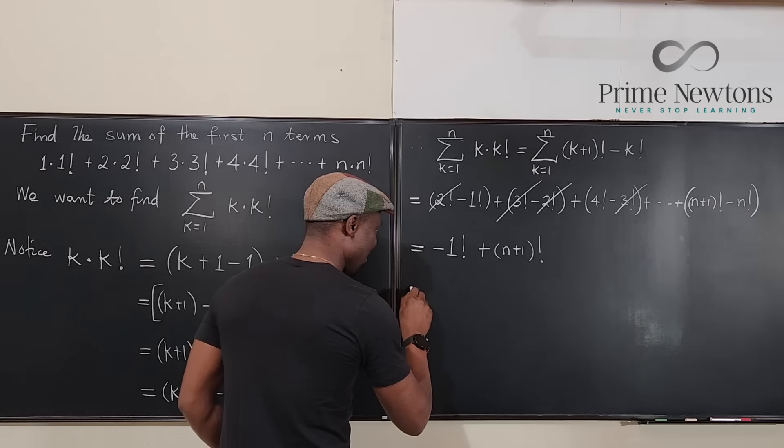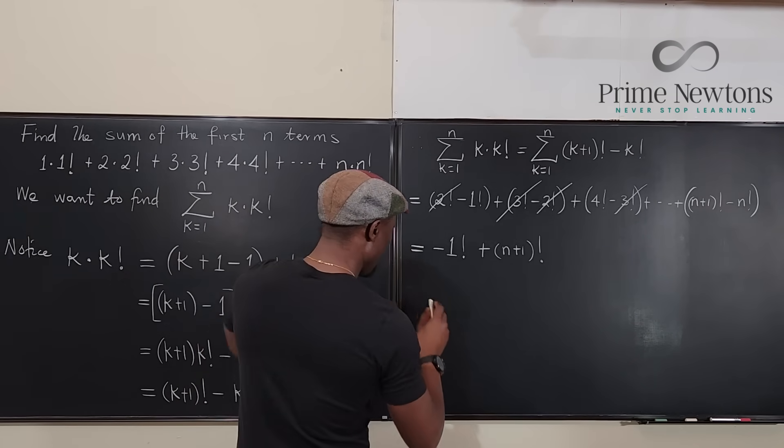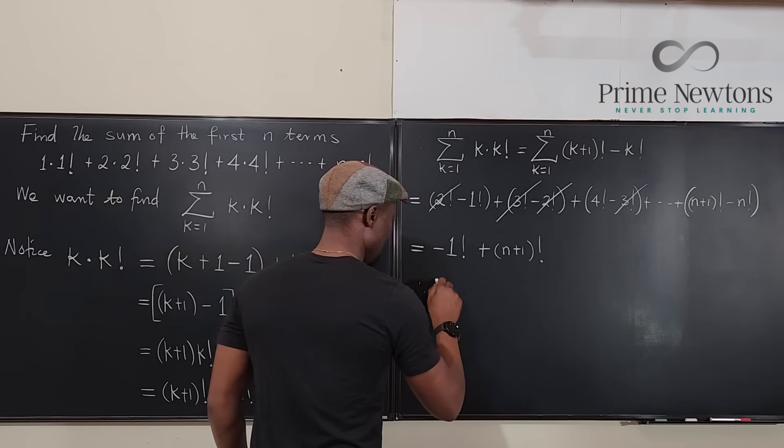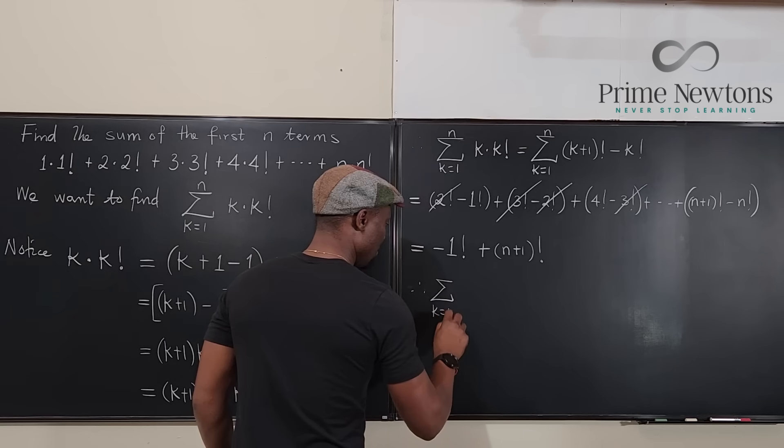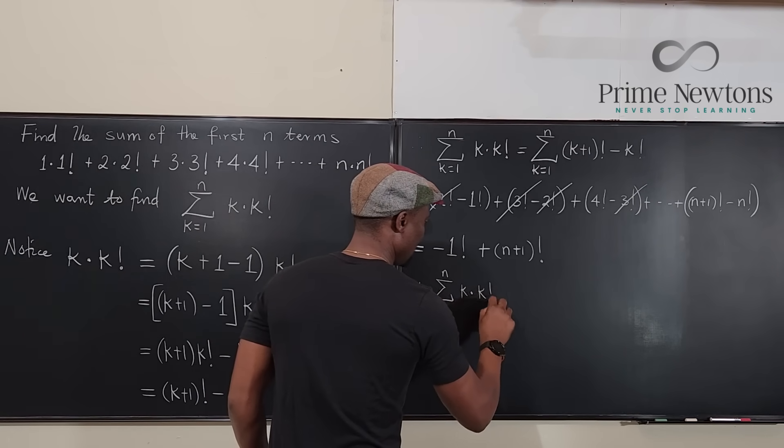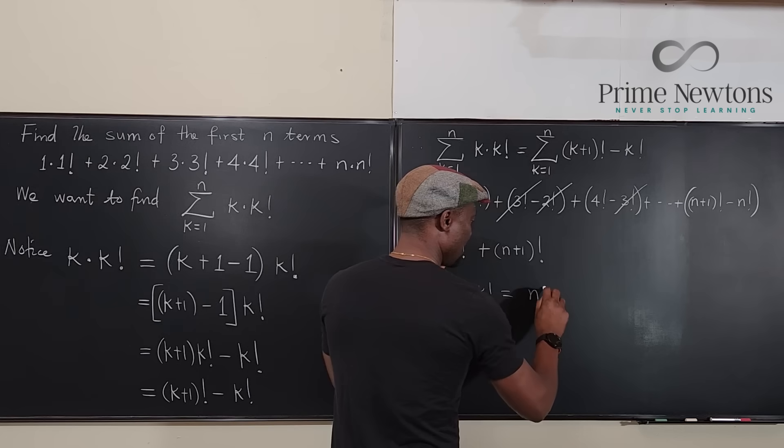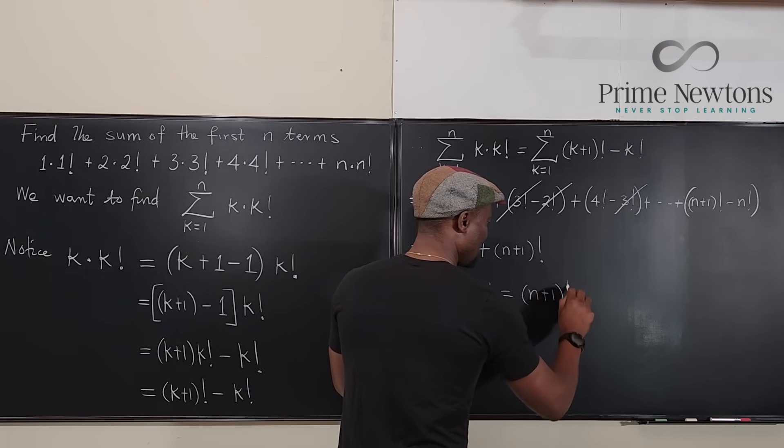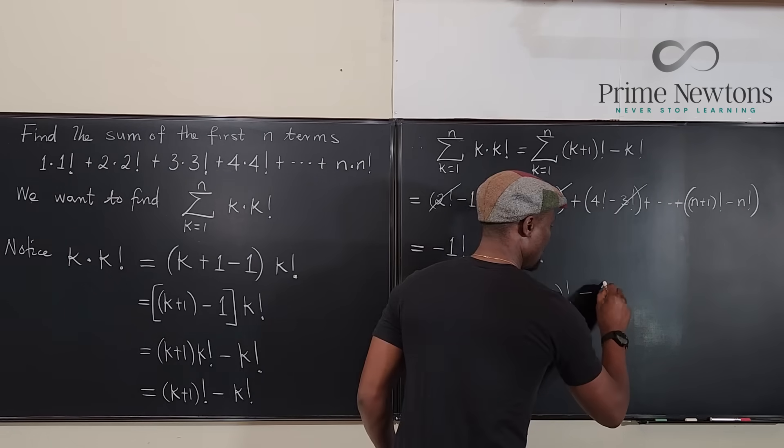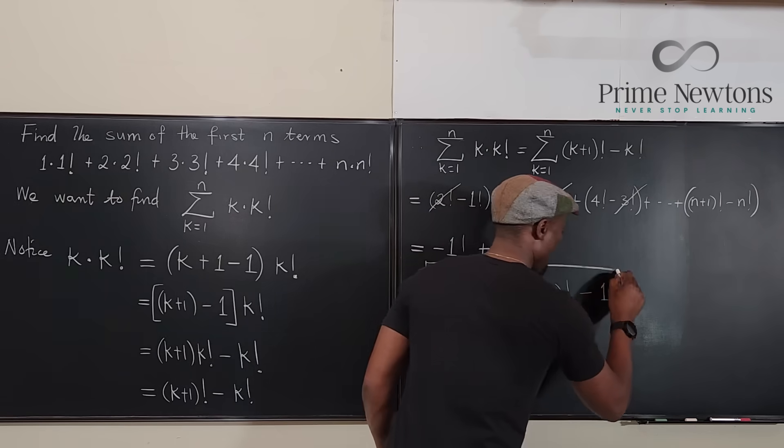So that means that this is equal to, therefore, the sum from k equals one to n of k times k factorial will be equal to n plus one factorial. Now, one factorial is just one minus one. And this should be our final answer.